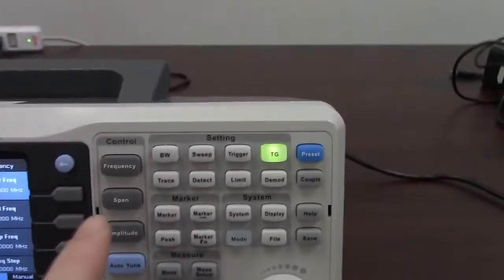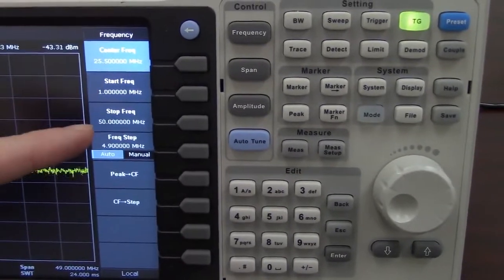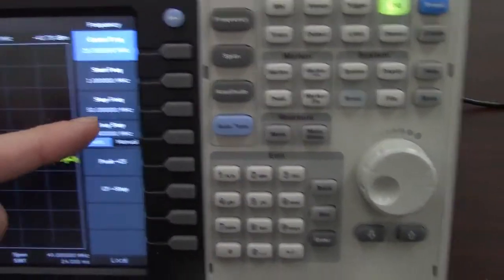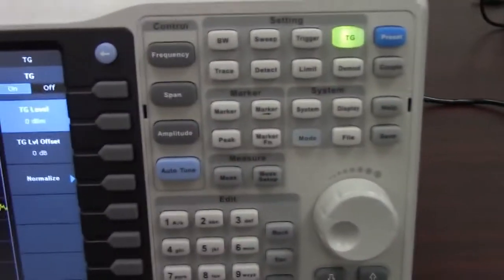So, what I have done since this is a 30 megahertz filter, I've set my frequency. So, our start frequency is 1 meg, stop frequency is 50 megahertz. We're going to set up the tracking generator here. I'm going to turn on the tracking generator.